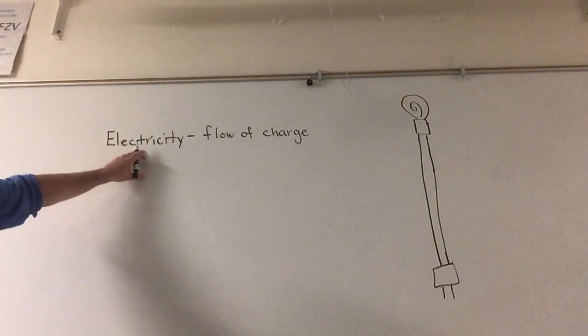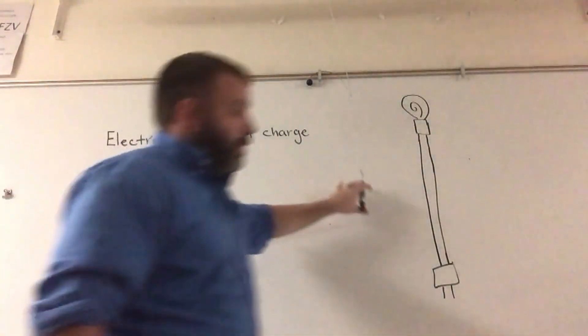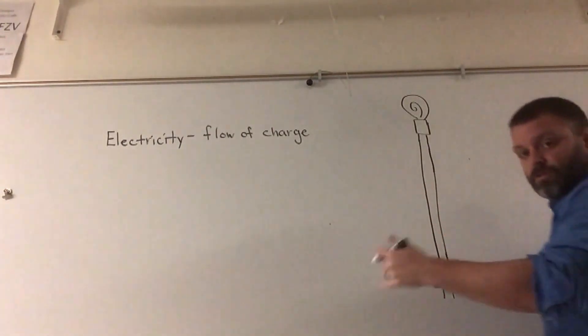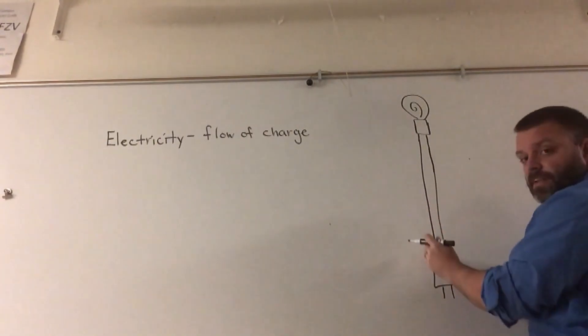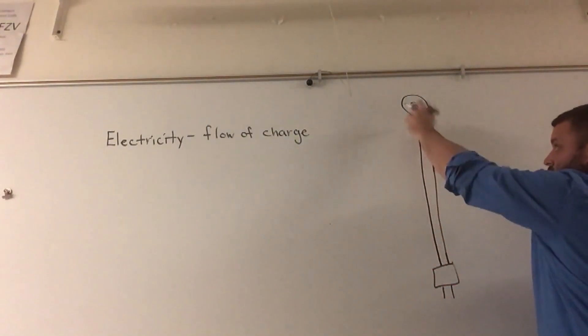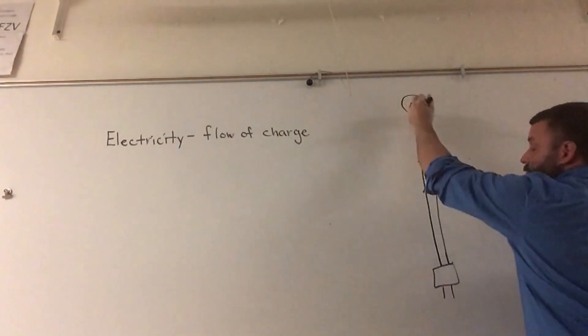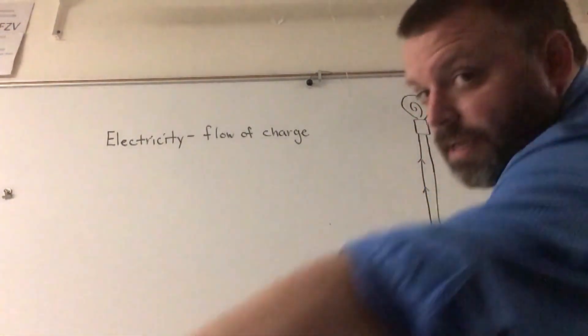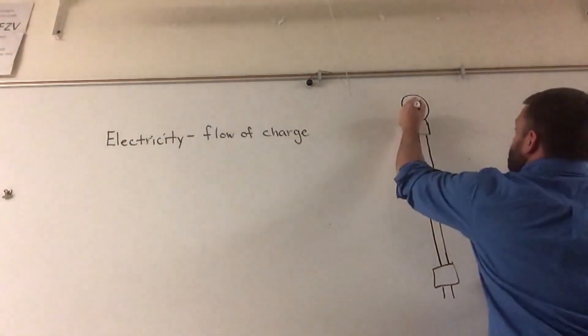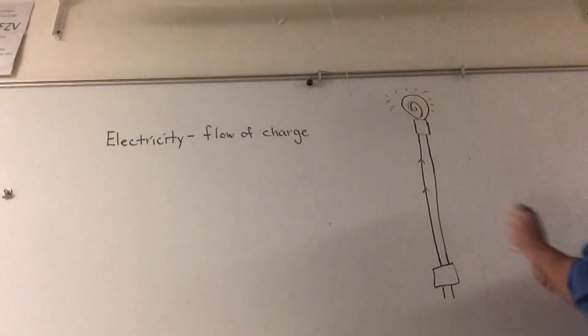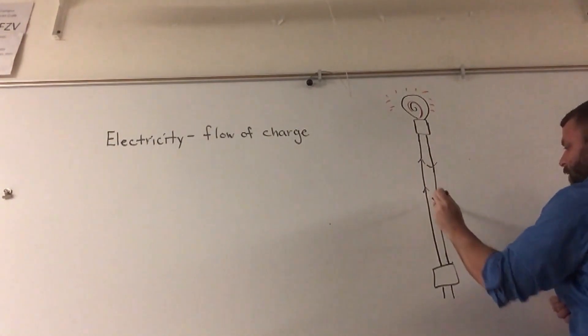You might already know that electricity is a flow of charge. If I were to plug in a light bulb without a switch into an electrical outlet, you're going to get the flow of electrons up one wire into the light bulb itself where the filaments heat up causing the light bulb to glow, and then the electrons return down the other wire back into the outlet. This is called a circuit.